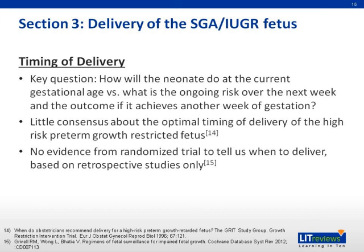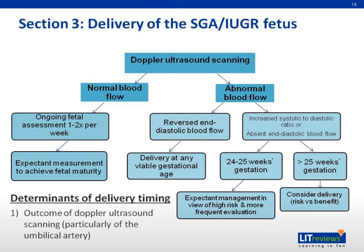There is, however, an important question that has remained elusive to obstetricians even till today. The key question is: how will the neonate do at the current gestational age versus what is the ongoing risk over the next week and the outcome if it achieves another week of gestation? There is little consensus about the optimal time of delivery, partly due to insufficient evidence from randomized controlled trials. The author did mention some determinants to assist obstetricians, such as Doppler ultrasound scanning — particularly looking at the umbilical artery as a determinant for the delivery decision.